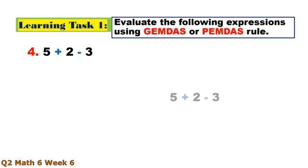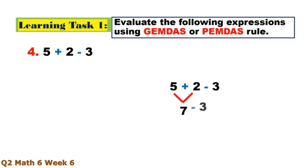Number 4. Addition first: 5 plus 2 equals 7, minus 3 equals 4.